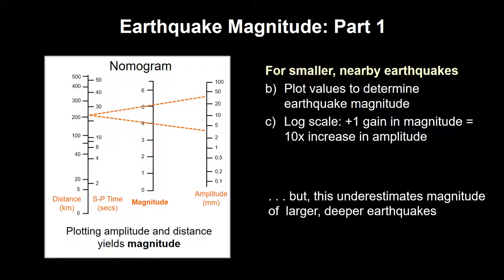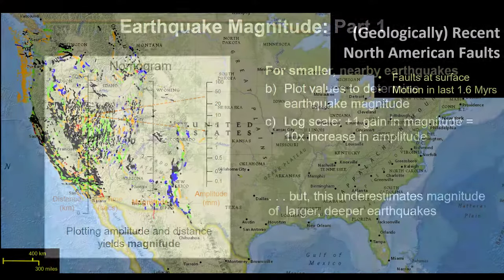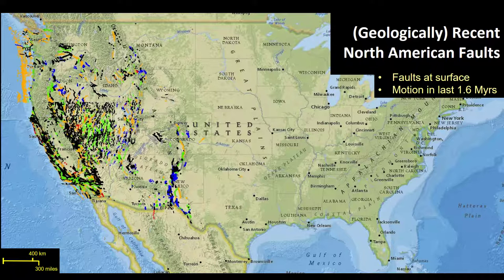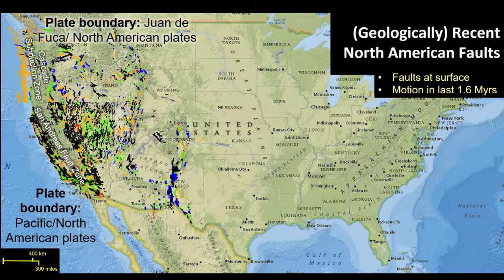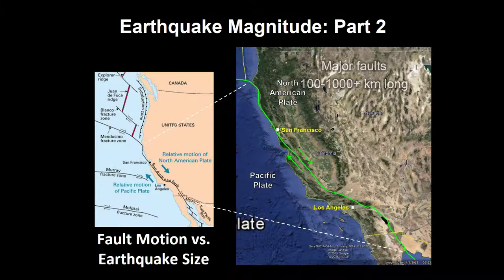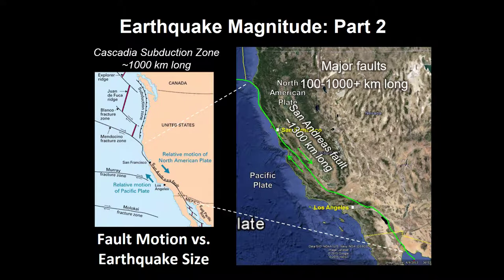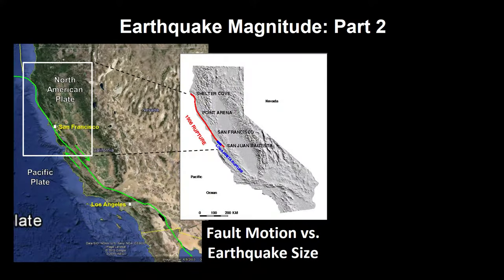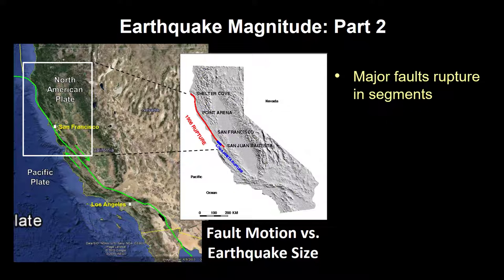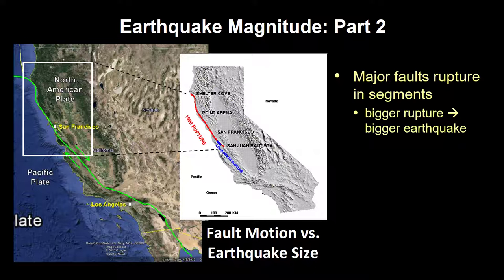The second magnitude calculation we'll discuss takes fault size into account. This is a map of active US faults. Most of them are associated with two different types of plate boundary, and we are particularly interested in the Cascade and San Andreas fault zones, as they have the potential for very large, dangerous earthquakes. Like many major fault systems around the world, these two fault zones are 1,000 km long or more. These faults break in segments, and the length of the segment that ruptures determines the magnitude of the earthquake. For example, the 7.9 magnitude San Francisco earthquake ruptured a segment of the San Andreas that was 10 times longer than the break caused by the 6.9 magnitude Loma Prieta quake.